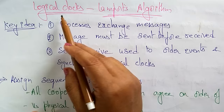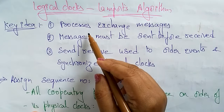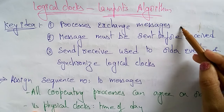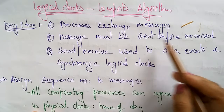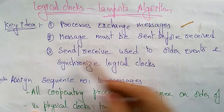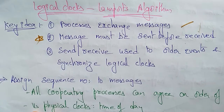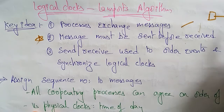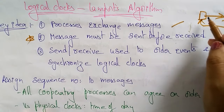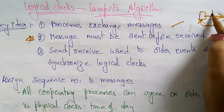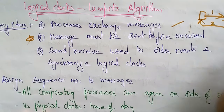The key idea of Lamport's logical clocks algorithm is that it is a process of exchanging messages. The message must be sent before it is received. First you need to send the message, and later you have to receive the reply — the message must be sent first, and later you receive from another process or from another system.